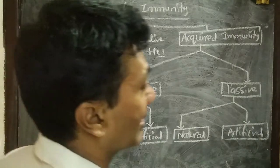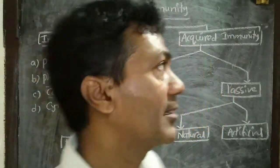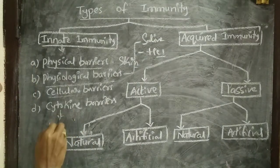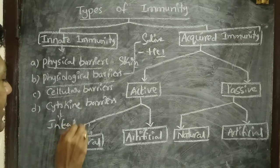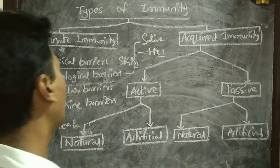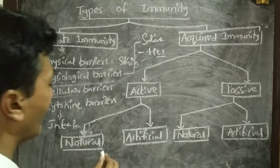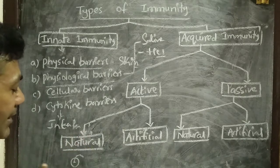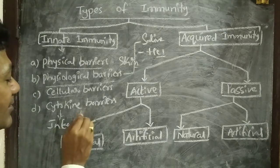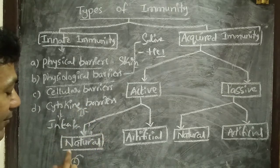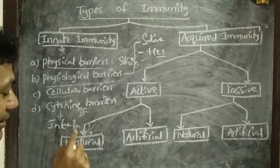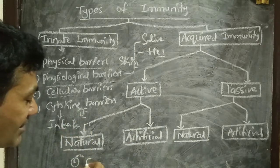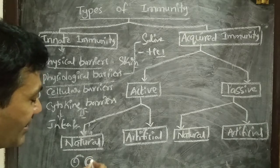The fourth component is cytokine barriers. Cytokines are soluble mediators that play a vital role in immunity. Among them, we have interferons — a type of cytokine. A virally infected cell is able to produce an antiviral protein called interferon. This interferon acts as a coat upon non-infected neighboring cells to prevent them from getting infected.